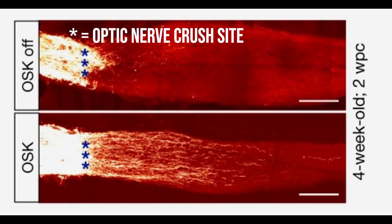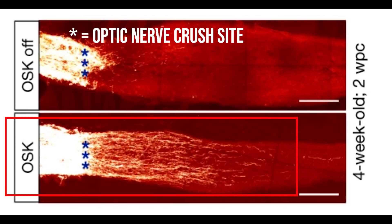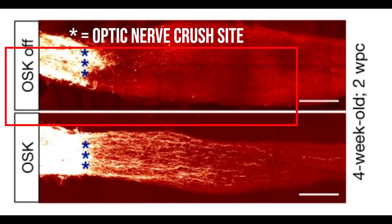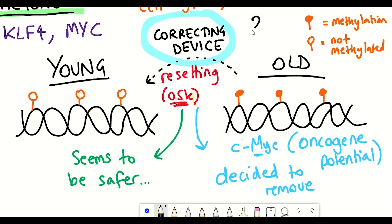As you can see in this figure, when they induced the expression of these genes, remarkably they saw regeneration and sprouting of these axon fibres extending around five millimetres. When these genes weren't expressed, they didn't see any regenerative or survival effects. So as they hypothesised, changes within the epigenetic marks could be the key mechanism behind this regenerative potential.